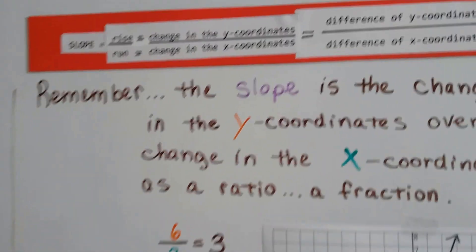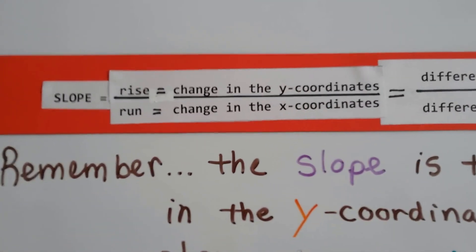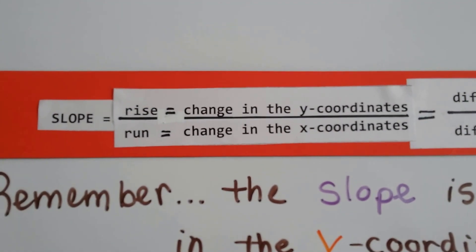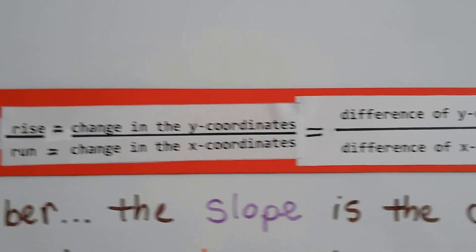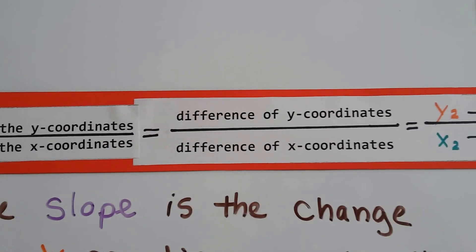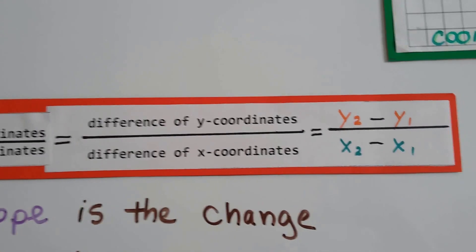So remember, the slope is the rise over the run. It's the change in the y-coordinates over the x-coordinates as a fraction. That's the difference of the y-coordinates over the difference of the x-coordinates.